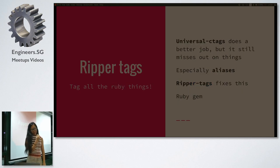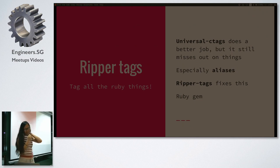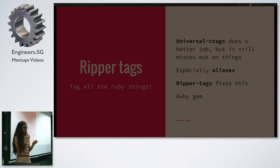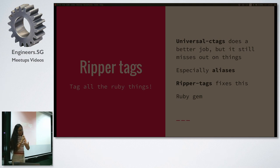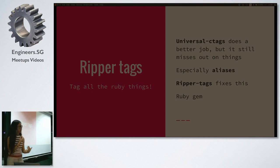On the components: universal ctags is the currently actively maintained implementation — the original ctags was only for C, then came exuberant ctags (last updated 2009). Every blog post about Vim and ctags asks you to install exuberant ctags; don't do that. Universal ctags still misses some things in Ruby — notably aliases. But there's a gem called ripper-tags: ripper is Ruby's built-in parser, so it parses Ruby better. You can install ripper-tags to generate your tags instead of universal ctags.